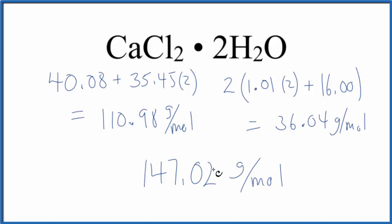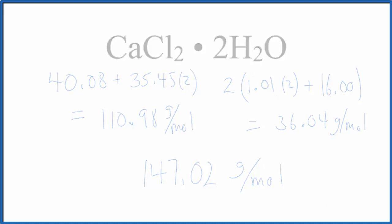Note that the periodic table that I use rounded to two decimal points, so your answer might be a little different if you use a different number of decimal points. This is Dr. B with the molar mass for calcium chloride dihydrate, CaCl2·2H2O. Thanks for watching.